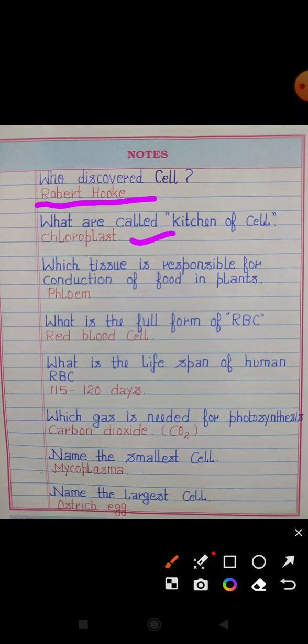Chloroplast is called the kitchen of the cell. Which tissue is responsible for conduction of food in plants? Answer: Phloem. What is the full form of RBC? Answer: Red blood cell.